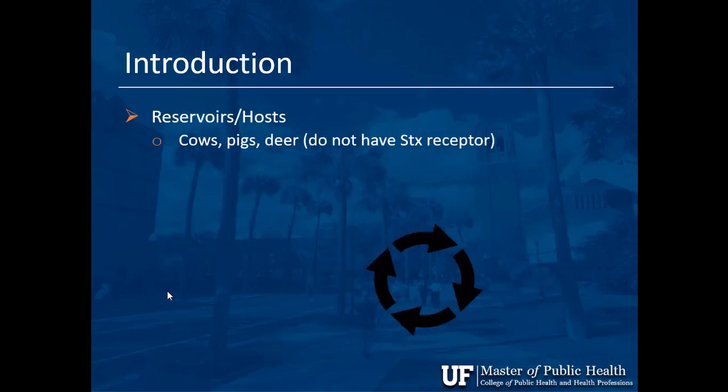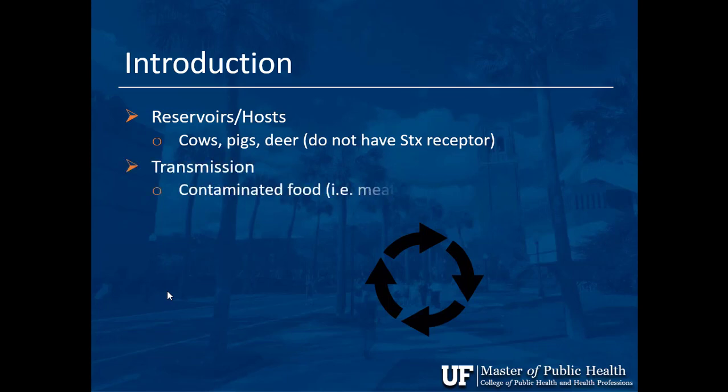Cows are basically holding on to the bacteria, making them a reservoir or host. It's not just cows — pigs and deer also carry E. coli that produces Shiga Toxin but lack the receptor for it.